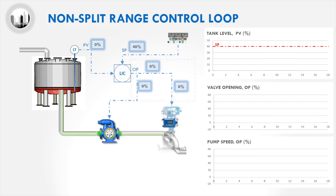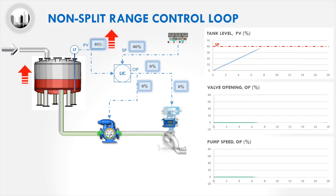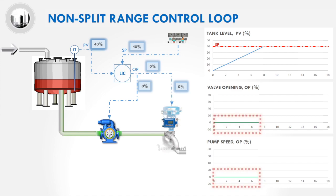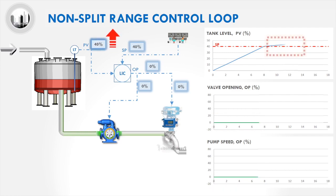Let us evaluate the behavior of the process when we introduce flow into the inlet of the tank. When the level starts to increase, the level transmitter LT will sense the increase of the level. Since the tank level has yet to exceed the controller set point, the output including the valve opening and pump speed are maintained at zero percent. Due to the valve still being fully closed, the tank level will continue to increase.